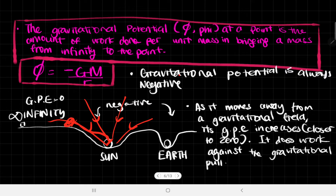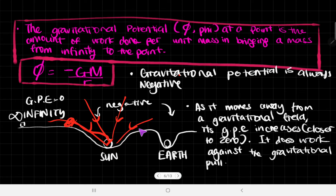We could also think about it this way: if it goes into the sun and then comes back out because of its rocket fuel or something, as it moves away from a gravitational field, the gravitational potential energy would increase — from a very negative number to a less negative number. That's how it would increase, closer to zero, because it does work against the gravitational pull of whatever it was — in this case, the sun.